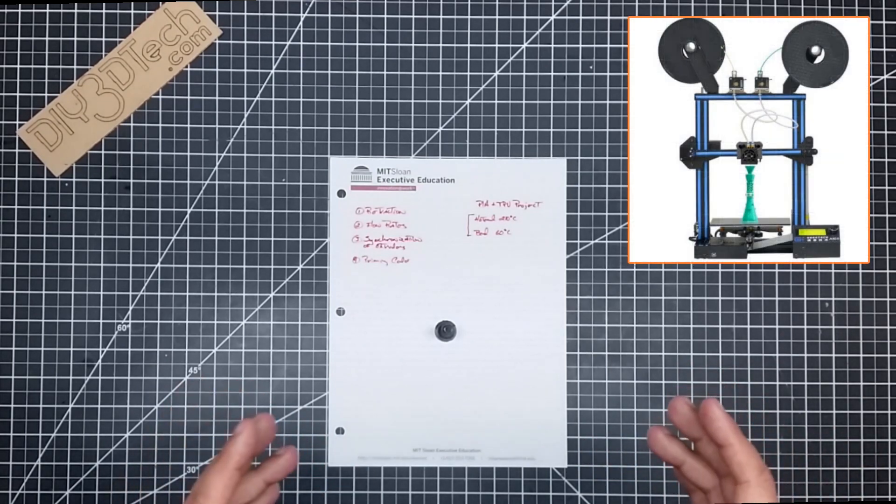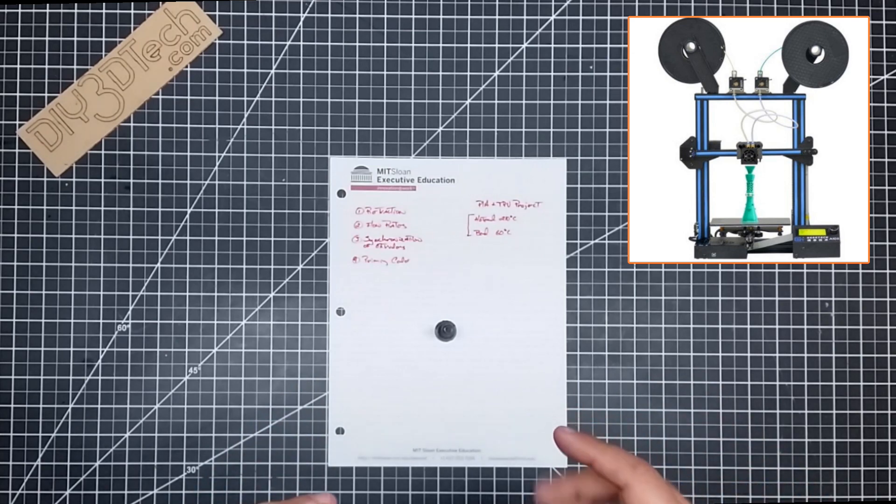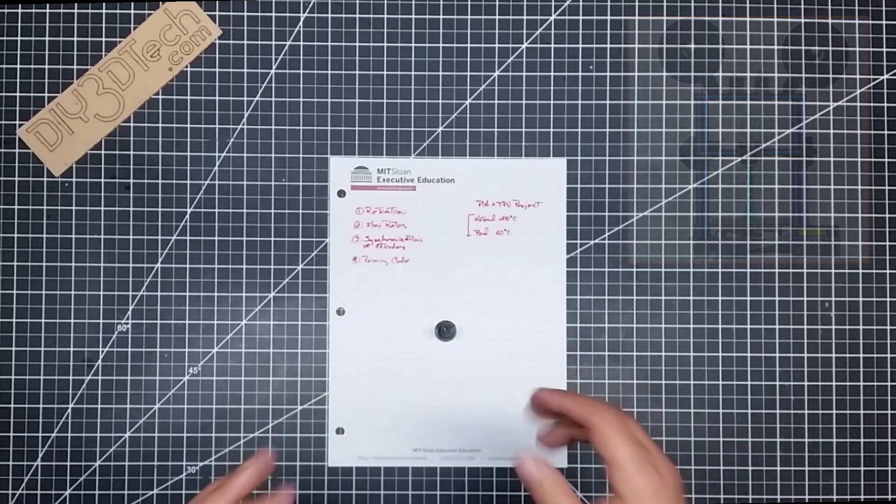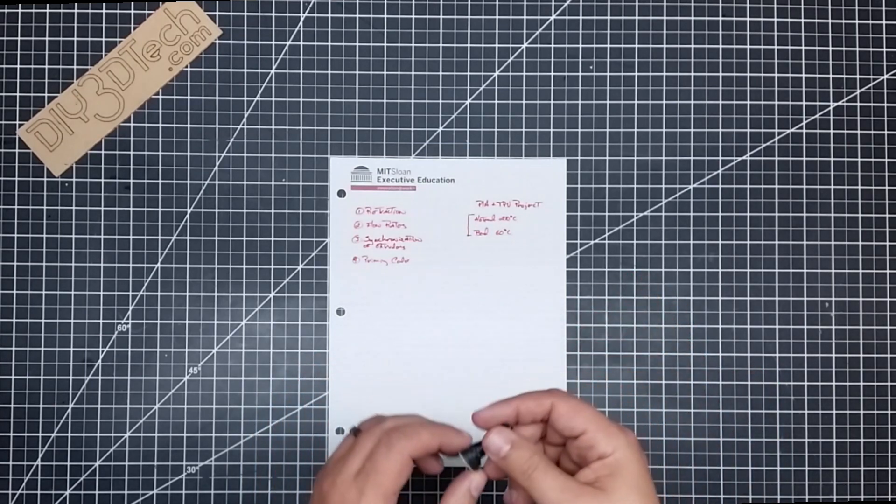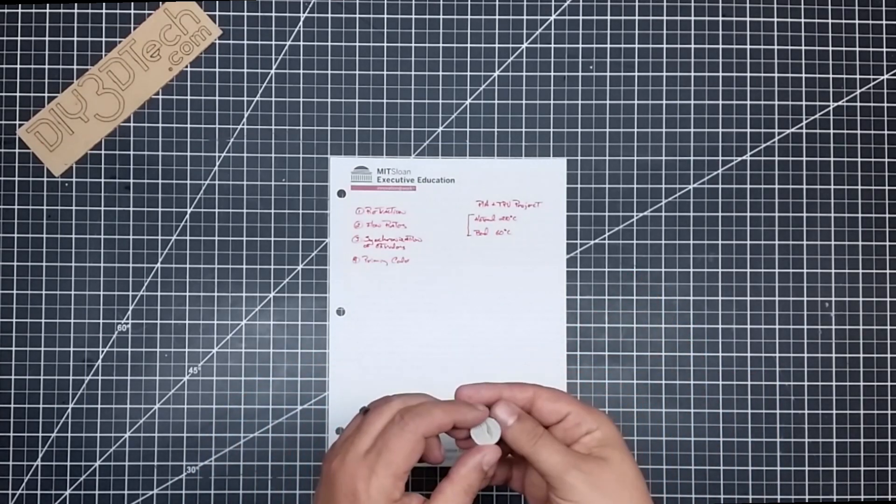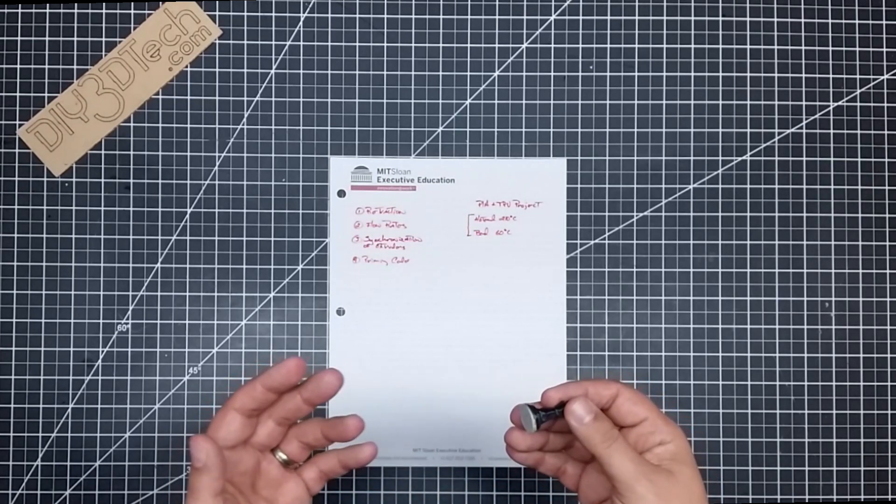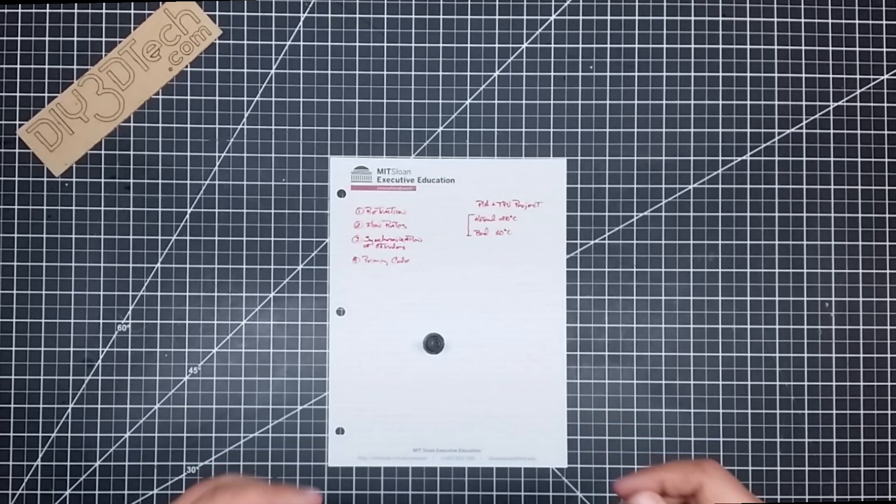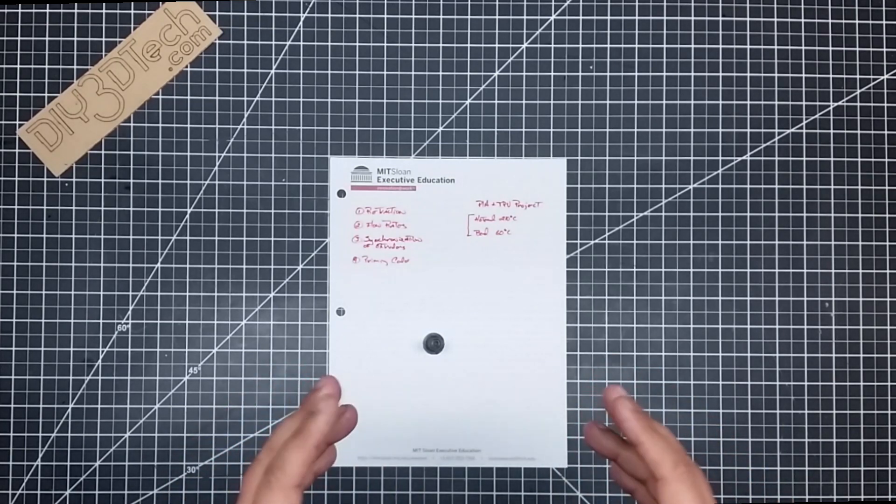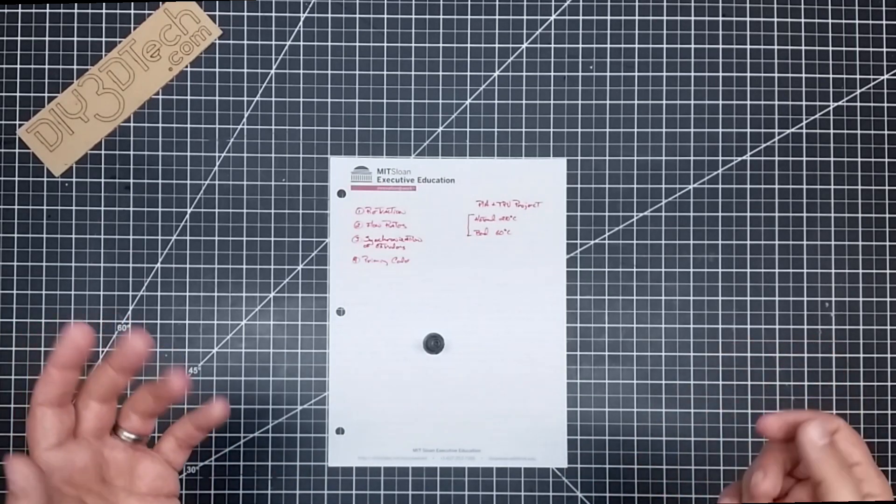So I used the GTAC A10M to mix TPU and PLA and this is the results I got, which was rather interesting. Now yes, it's a little bit ugly of a part, but it's an interesting experiment in material science and this is one of the reasons I wanted to get the A10M—I want to experiment with mixing different filaments together and see what happens.